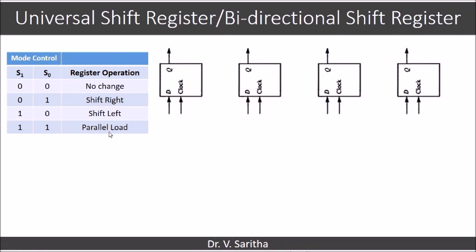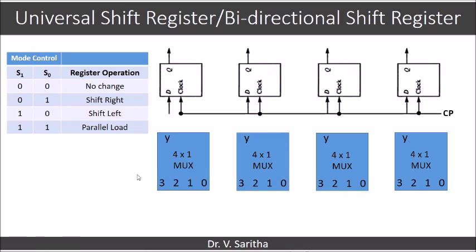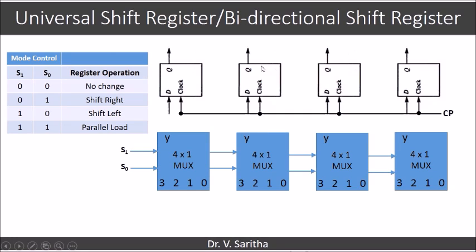For this design we require four flip-flops — we are considering four D flip-flops — and a clock pulse is connected. We also require 4-to-1 multiplexers because we are going to select one operation out of four operations. Connect S1 and S0 selection lines to all the multiplexers. When S1, S0 is 0,0 it means no change state, so the output should be preserved as it is. The output of the multiplexer is connected to the input of the D flip-flop.